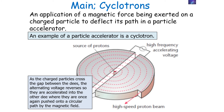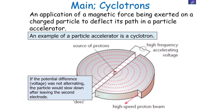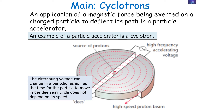As the charged particles cross the gap between the Ds, the alternating potential difference reverses, accelerating them into the other D where they are once again pushed onto a circular path by the magnetic field. Once emerging from that second D, the voltage again reverses and accelerates the particles into the first D where the process repeats. If the potential difference were not alternating, the particle would slow down after leaving the second electrode, because it would be going into a potential of like value and would be repelled.